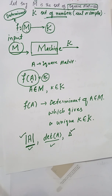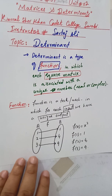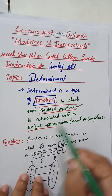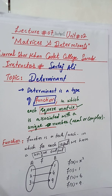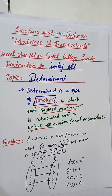To conclude: determinant is a type of function in which each square matrix is associated with a unique number, which may be real or complex. Remember that determinant is only defined for square matrices. In the coming videos, we will define different methods to find the determinant of a given matrix. This is the basic concept — determinant is a type of function. Thank you.